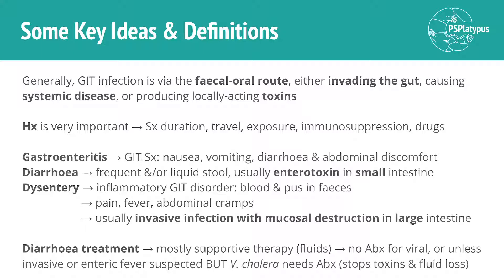A brief note on history — it's really important to figure out what the potential pathogens may be. Looking at how long the symptoms have lasted, whether the person's been traveling recently, what they've been exposed to — so food, other people, certain animal reservoirs potentially — whether they've been immunocompromised or on immunosuppressants, and other medications.